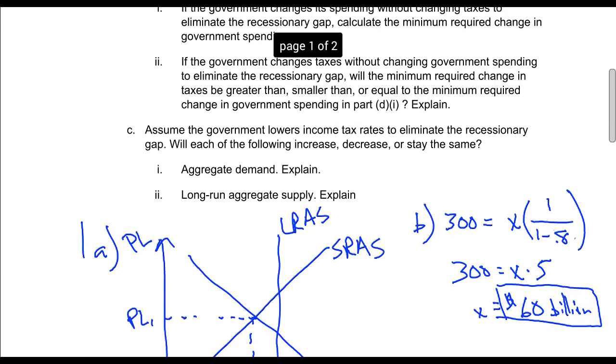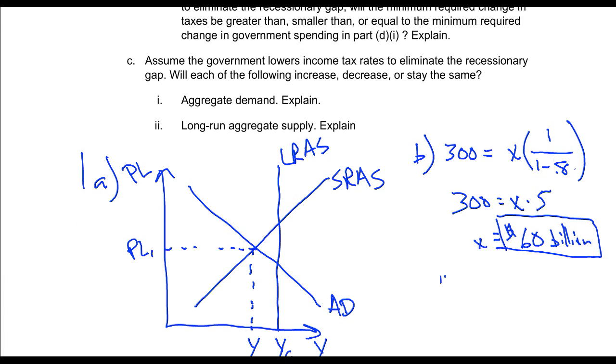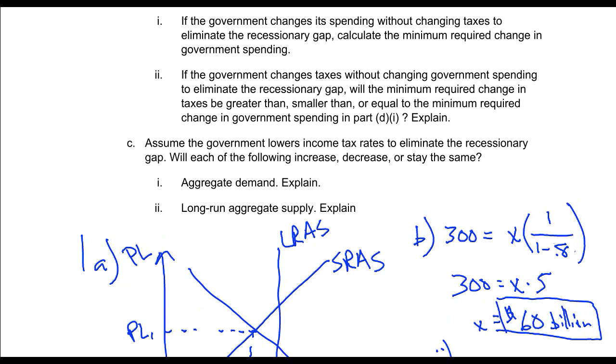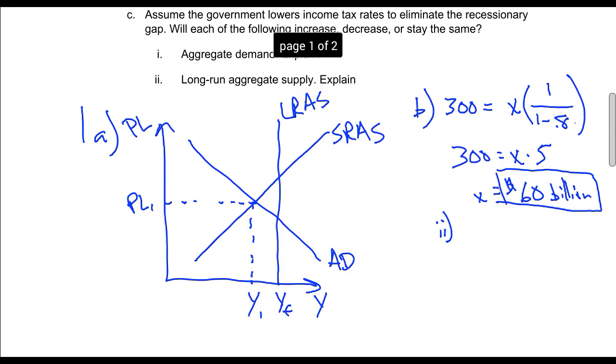If the government decides to change taxes without changing government spending to eliminate the recessionary gap, will the minimum required change in the tax be greater than, smaller than, or equal to the minimum required change in government spending? Explain. I wouldn't actually need to solve it, but I could solve what would be the minimum amount.